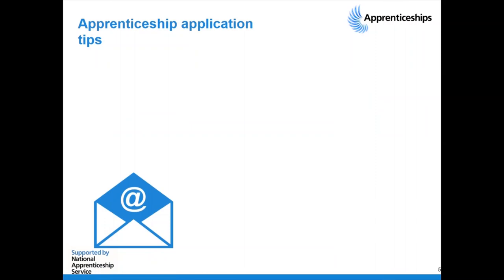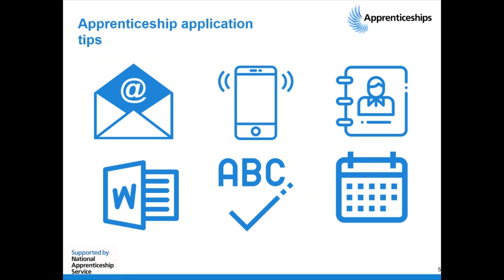Now for apprenticeship application tips. First, you need a sensible email address — potential employers will judge you based on it. Just your name, or your name and a number, is perfectly acceptable. Steer clear of immature, unprofessional ones. Also make sure your application form has your most up-to-date contact details — phone number and email address. Nothing is worse than an employer trying to reach you for an interview and finding the number you gave is three years out of date.